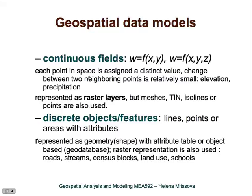Here are the basic properties of continuous fields and of discrete objects and features. Continuous fields are usually represented as rasters, but vector representation is also possible as thin iso lines or points, and we will talk about vector representation later.